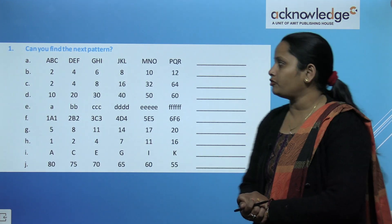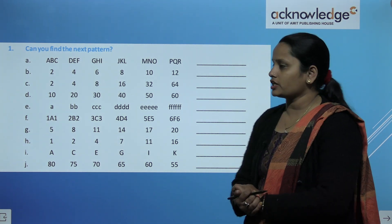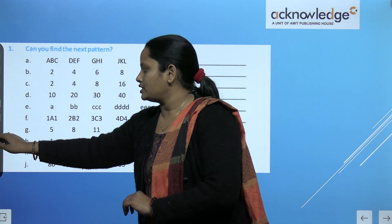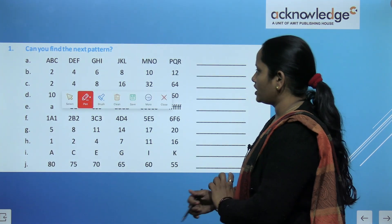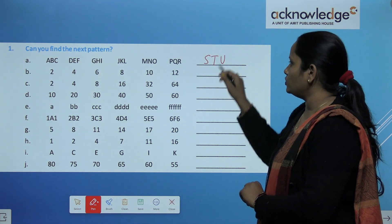So here children, we have to find the next pattern. So here few questions are given, let's do it. First one is A, B, C, D, E, F, G, H, I, J, K, L, M, N, O, P, Q, R, S, T, U.